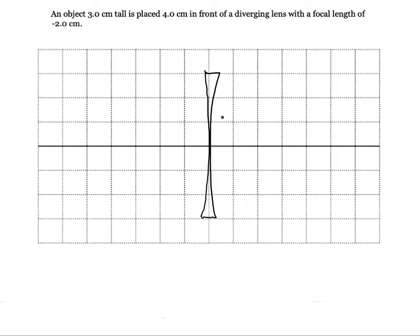A diverging lens will bow out at the top and bottom so it's going to have its narrowest section in the middle. We want to put a 3 centimeter object 4 centimeters in front. So that would be like this. That's our object.